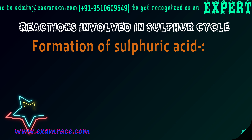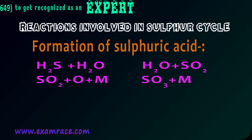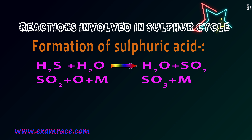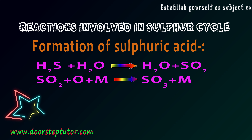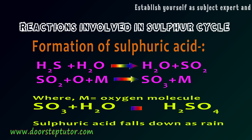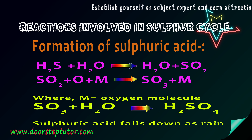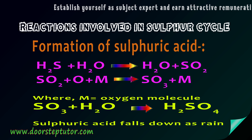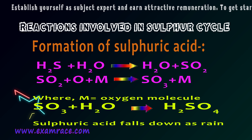In the sulfur cycle, sulfuric acid is also formed. Hydrogen sulfide reacts with ozone (O3) to produce water (H2O) and sulfur dioxide (SO2). Sulfur dioxide then reacts with an oxygen atom and oxygen molecules (where M equals an oxygen molecule) to give SO3. This SO3 then reacts with water vapor to produce sulfuric acid (H2SO4), which falls as acid rain. The next video will cover acid rain in detail.